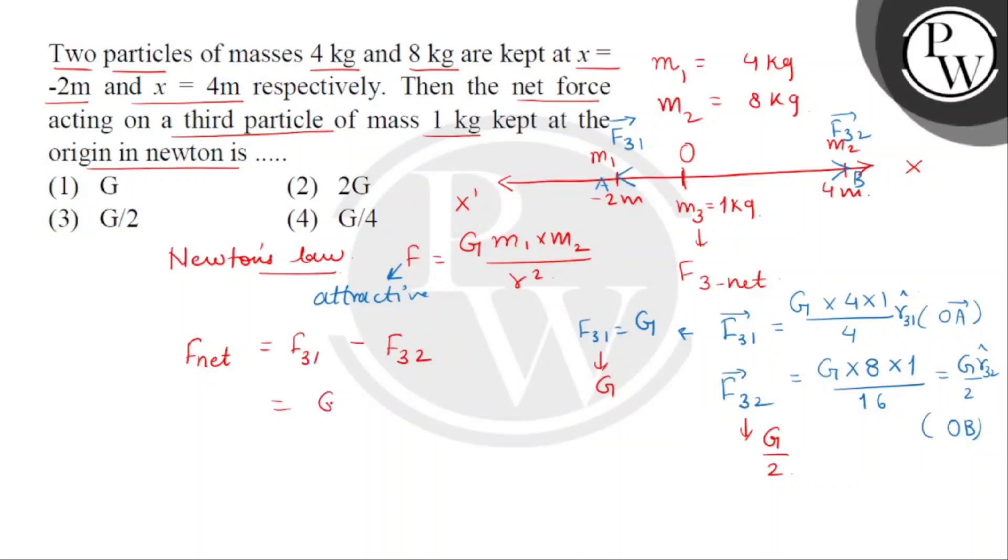This will be G minus G by 2, which is capital G divided by 2. Hence, the correct answer is option number 3. Thank you.